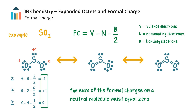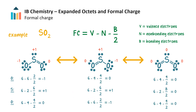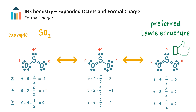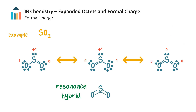The sum of the formal charges of a neutral molecule must equal zero. Doing the same calculation for the atoms in the other two structures gives their respective formal charges. The third structure is the preferred one since it has the lowest formal charges — its electron distribution makes it more stable than the other two structures. As a side note, from the video on resonance, we know that in reality all resonance structures contribute to the true structure — the resonance hybrid — but the Lewis structure with the most stable state will contribute more.